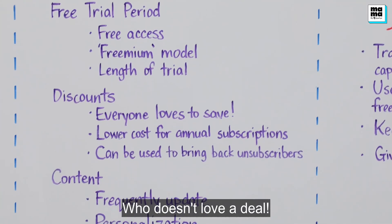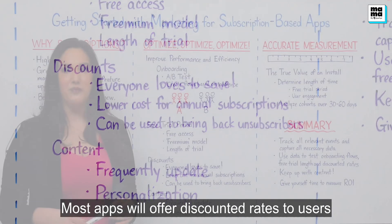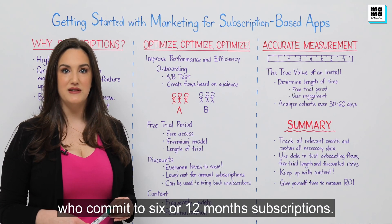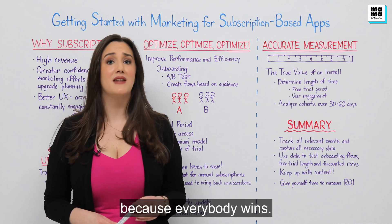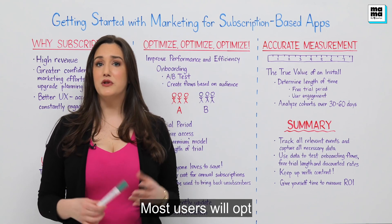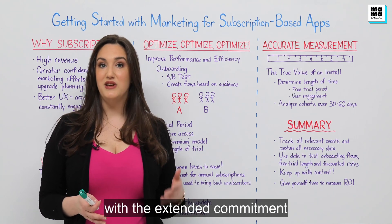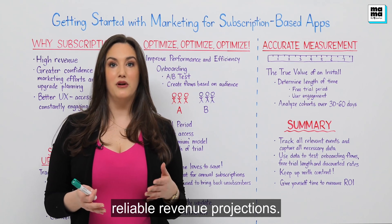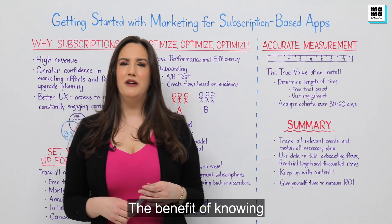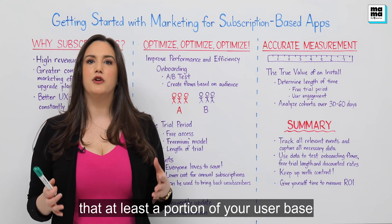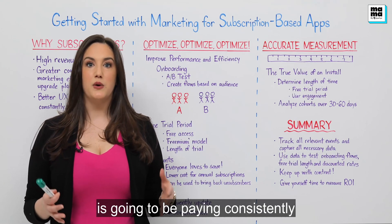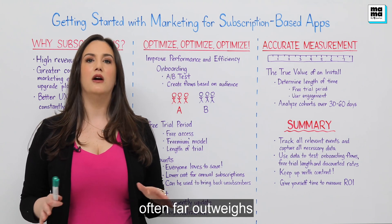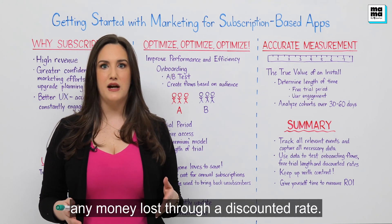Discounts. Who doesn't love a deal? Most apps offer discounted rates to users who commit to 6 or 12 month subscriptions. This is a great strategy because everybody wins. Most users will opt for the lower price plan with the extended commitment, and app developers can make more reliable revenue projections. The benefit of knowing a portion of your user base is paying consistently for the next 6 to 12 months often far outweighs any money lost through a discounted rate.